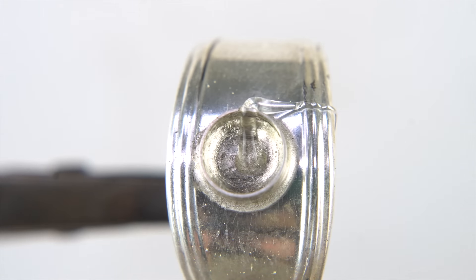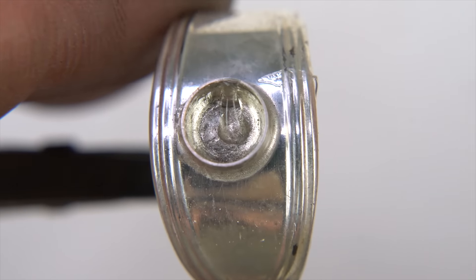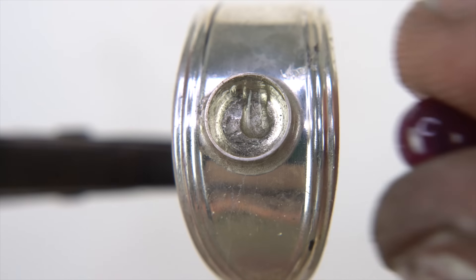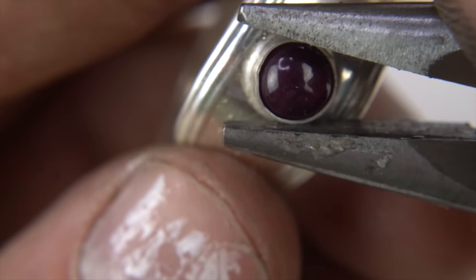So with that, I added some glue. And then just placed that ruby inside. Smushed it down. And I just took pliers to smush the bezel up against it.